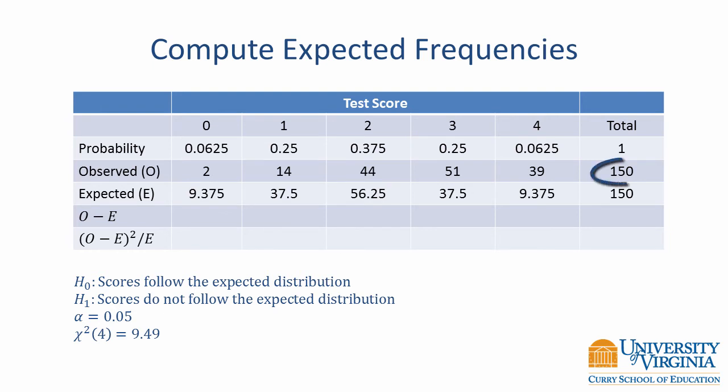In a similar way, 150 times 0.25 is 37.5. We can repeat this calculation at the remaining levels of our variable to obtain all of the expected frequencies.